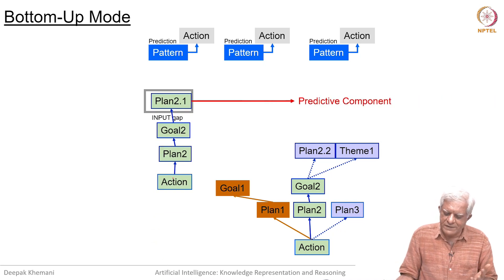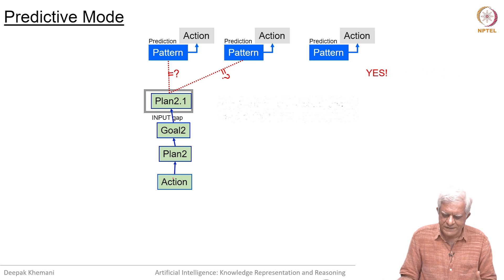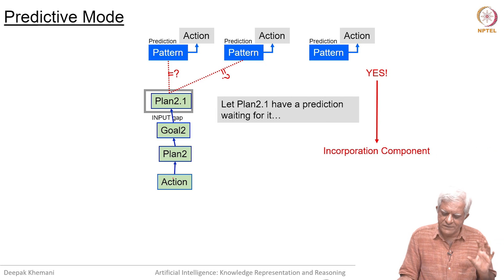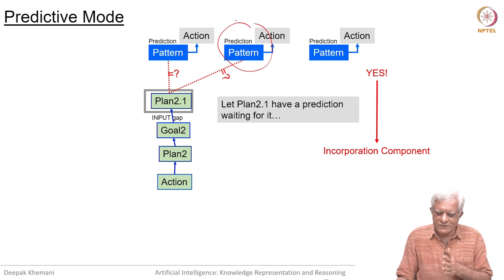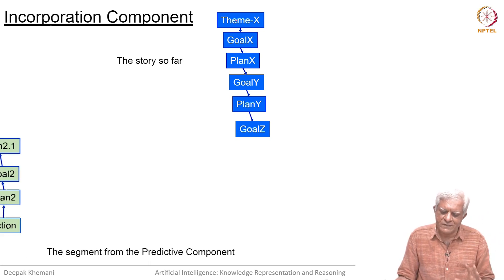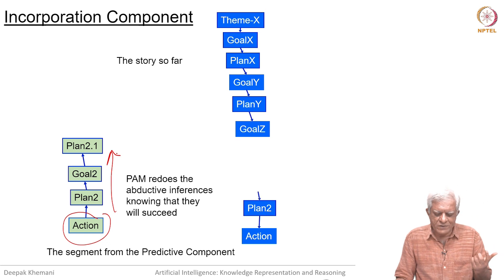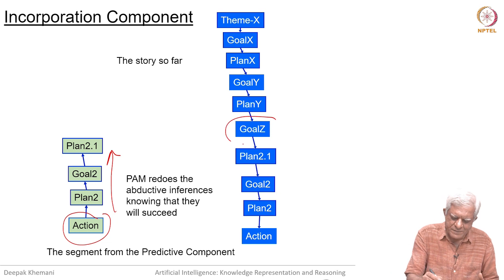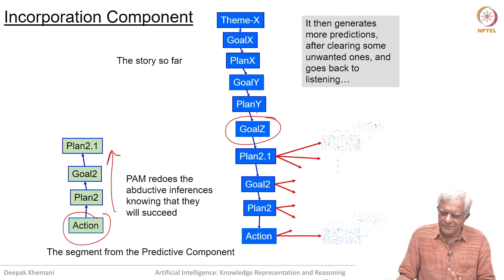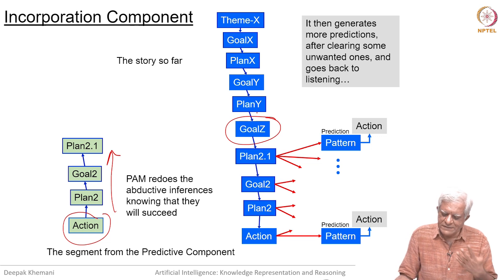Plan 2.1 goes into the input gap and again it goes into the predictive mode, trying them one by one — and in this example it now succeeds. PAM has found something it was expecting: plan 2.1 has a prediction waiting for it, and now it goes to the incorporation mode. PAM incorporates the chain — the story built from previous sentences plus the action heard and the inferences made, arriving at plan 2.1 — into the story. It will now generate new predictions of what it expects to see next.